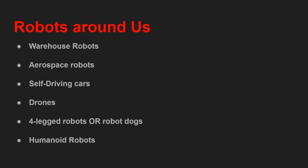Some types of robots around us include warehouse robots, aerospace robotics — robots in space that help with space exploration — and self-driving cars, which are a form of robot that eliminates human involvement in driving. You may have heard of Tesla cars, which have an autopilot feature, and this technology is slowly improving.